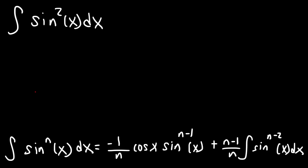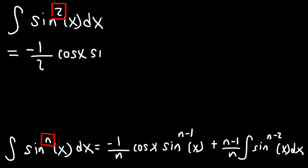So in this problem, we can see that n is equal to 2. Using the formula, it's going to be negative 1 over n, or negative 1 over 2, cosine x, sine to the n minus 1, or 2 minus 1, which is 1 — so we can simply say sine x — plus n minus 1 over n, so that's 2 minus 1 over 2, which is 1 over 2.